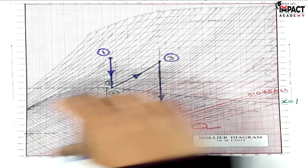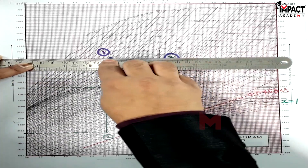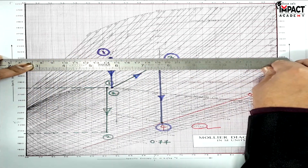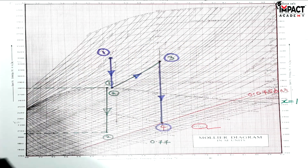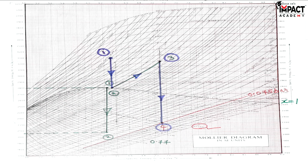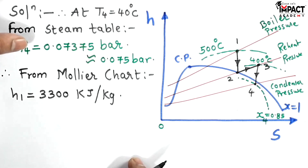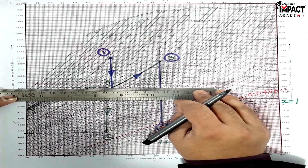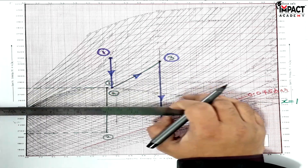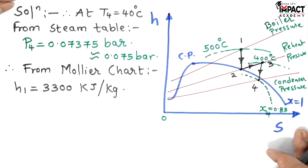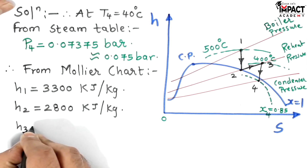Reading the enthalpies from the Mollier chart: h1 = 3300 kJ/kg, h2 = 2800 kJ/kg. For h3, each box is 10 kJ/kg on the chart — point three is five boxes above the 3200 line, giving h3 = 3250 kJ/kg. And h4 = 2200 kJ/kg. There may be a plus or minus 10 percent error, which is acceptable for a graphical method.